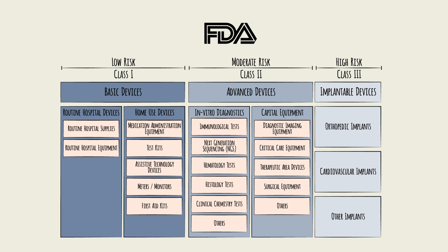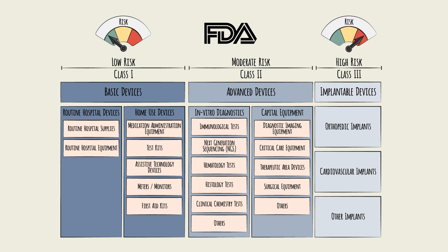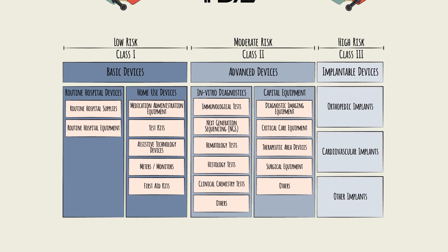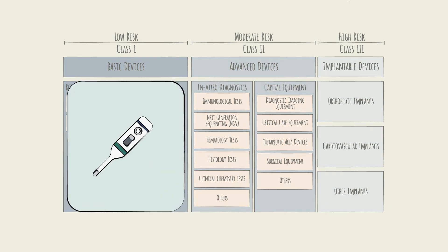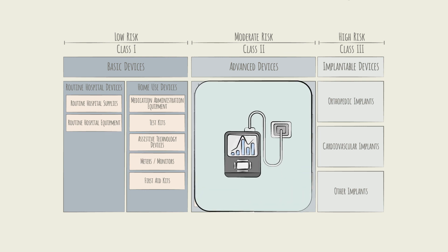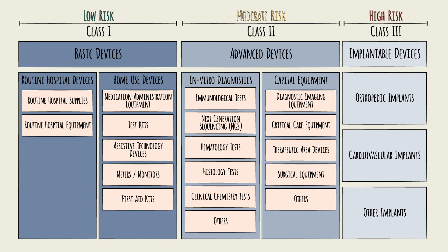While class 1, or basic devices, pose the least amount of risk, class 3, or implantable devices, have the highest risk potential as they are inside the body. Though most home-use devices are class 1, some, like continuous glucose monitors that are prescribed by hospitals, are classified as class 2 by regulatory bodies. Now that you know about the different types of medical devices, let's look at what it takes to bring a new device to the market.